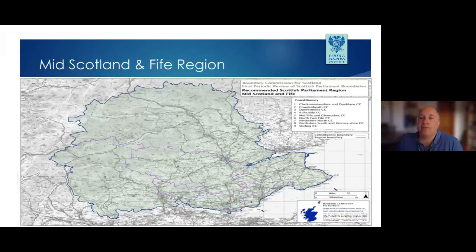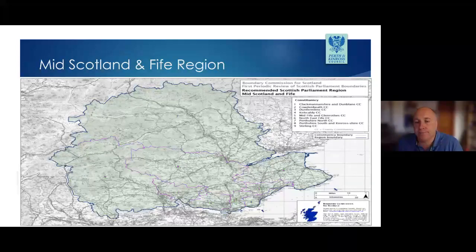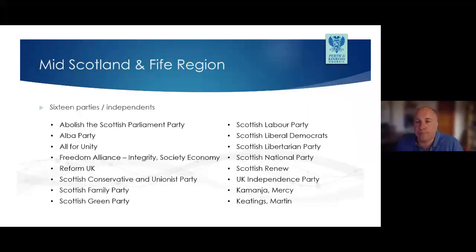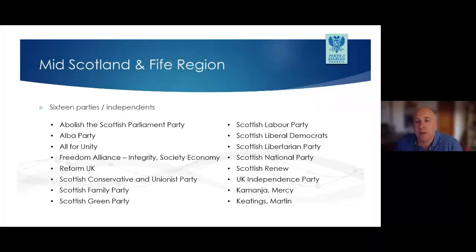This is a map for the Mid-Scotland and Fife region, for which Steve Grimmond, Chief Executive of Fife Council, is the regional returning officer. Along with our two constituencies of Perthshire North and Perthshire South and Kinross-shire, it also takes in the five constituencies in Fife, along with one in Clackmannanshire and one in Stirling. On the regional ballot paper there are 16 options for the voter — 14 registered parties and two independent candidates. The regional ballot paper is about one and a half times the length of an A4 sheet, so it may be more cumbersome to manage and you may need to use the compactors to push them down into the ballot boxes.